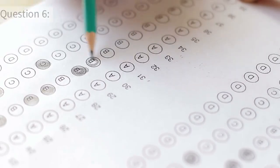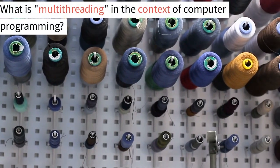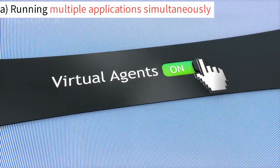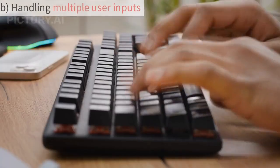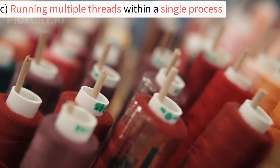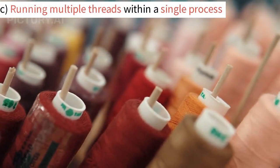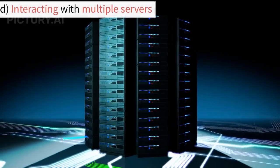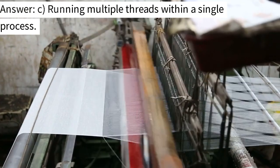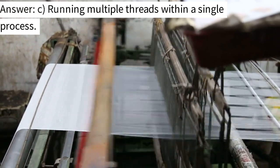Question 6. What is multi-threading in the context of computer programming? A. Running multiple applications simultaneously. B. Handling multiple user inputs. C. Running multiple threads within a single process. D. Interacting with multiple servers. Answer: C. Running multiple threads within a single process.